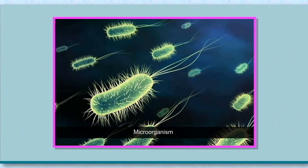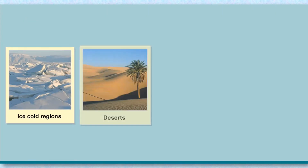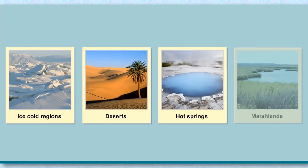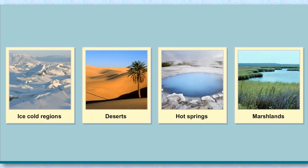Microorganisms can survive in all types of environments such as ice-cold regions, deserts, hot springs, marshlands, etc. They are also found inside the bodies of animals and humans. The growth of microorganisms requires the following suitable conditions.